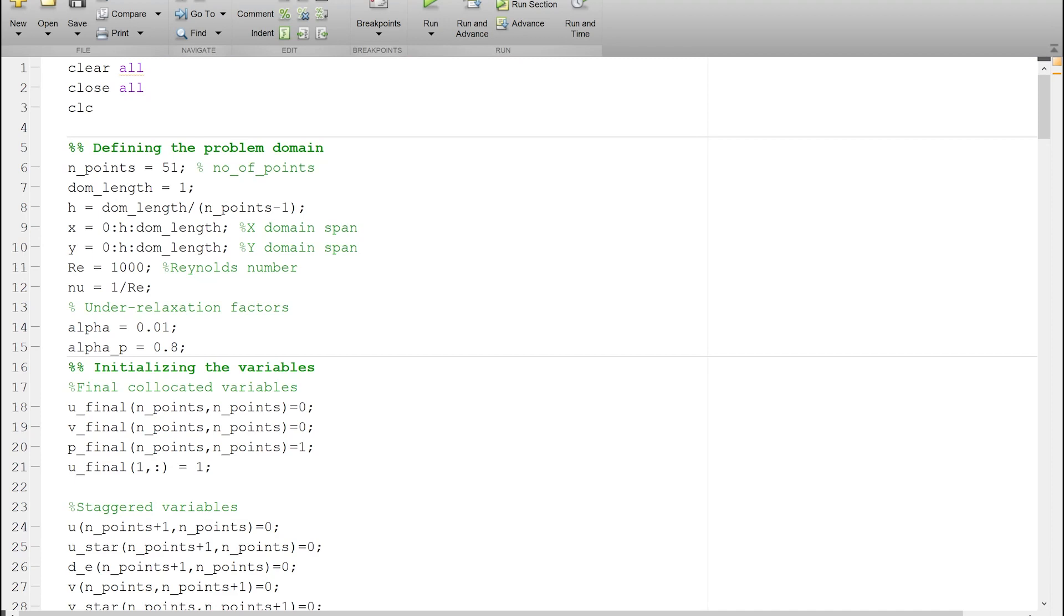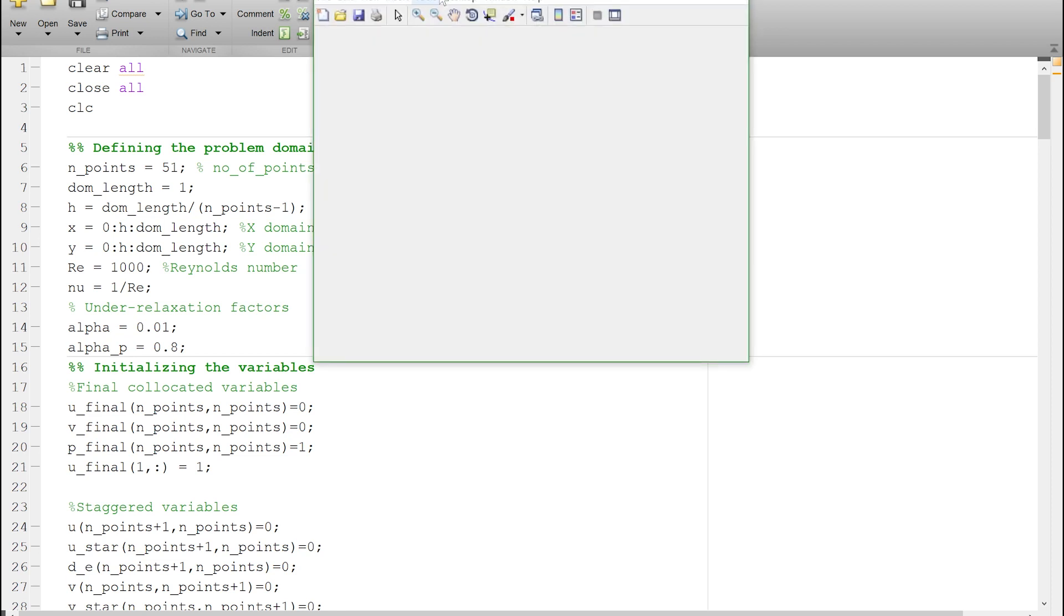With these changes, now if I run the code here, I have 51 points and a Reynolds number of 1000, you would see that the code would not crash. Because this is a higher Reynolds number case, it would take slightly longer to get the converged solution.